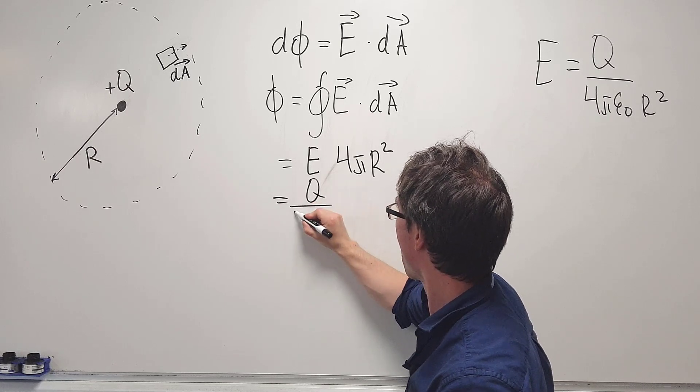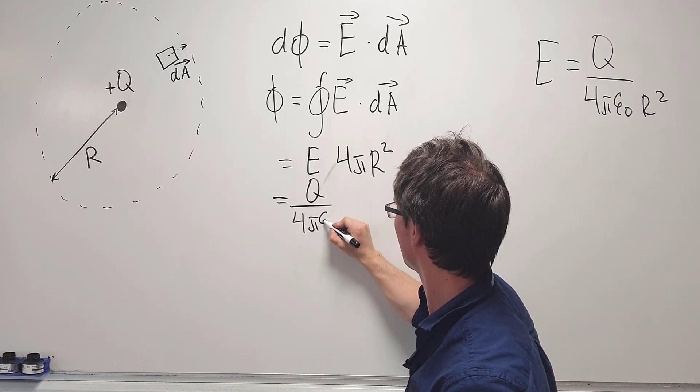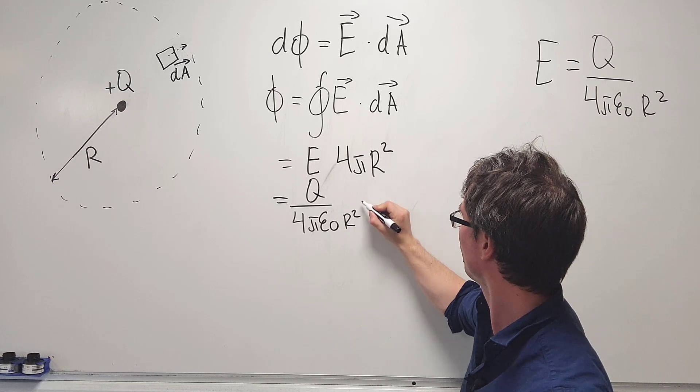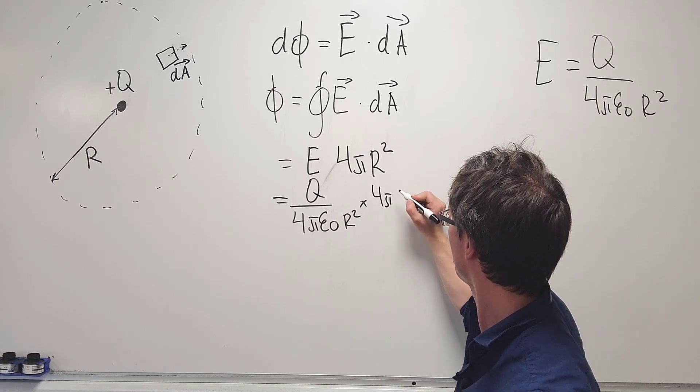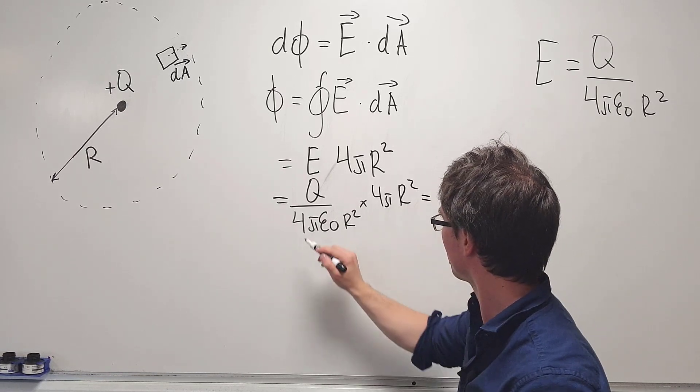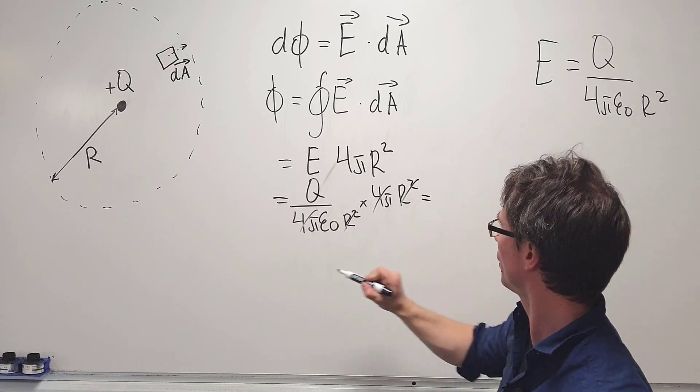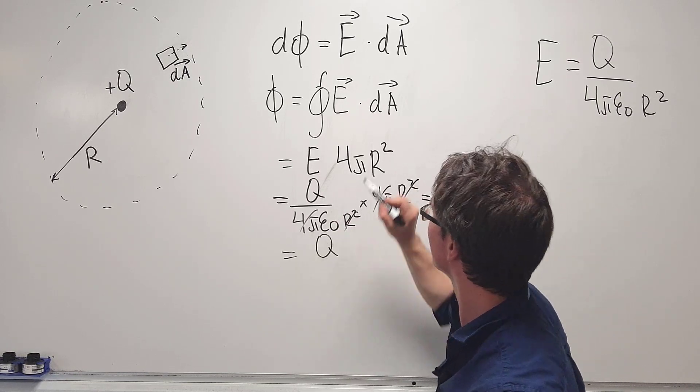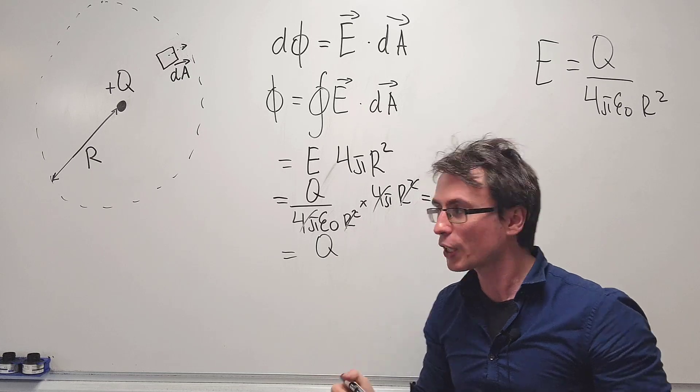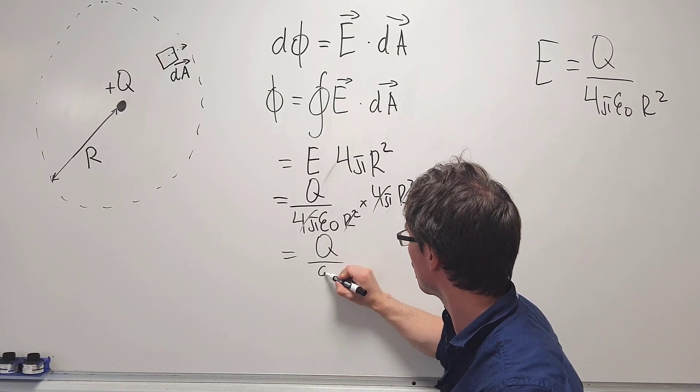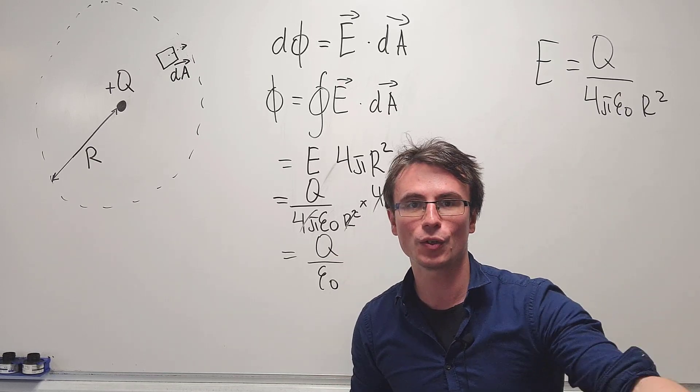We're going to get that Q over 4πε₀r² times 4πr². And that's a lot of cancellations. What we're left with is that the flux of E will just be equal to Q over ε₀.